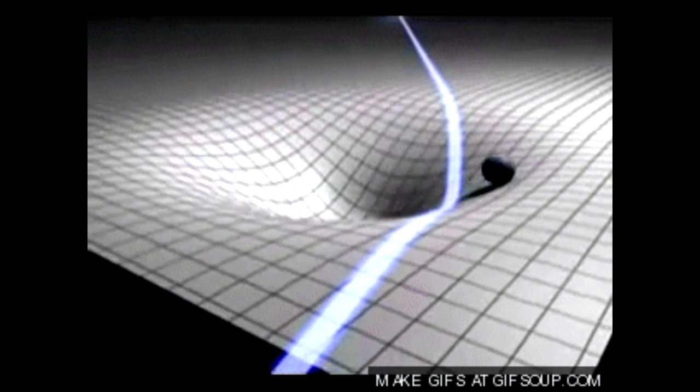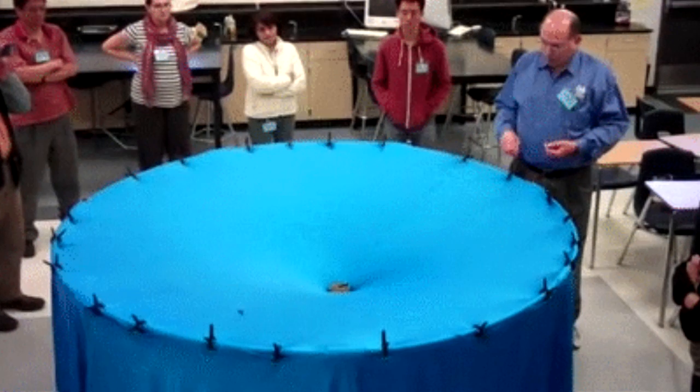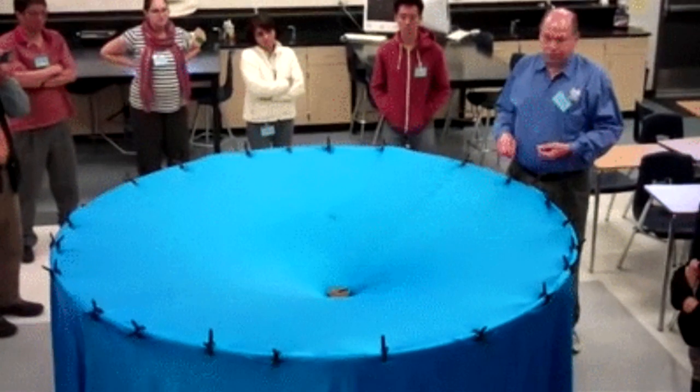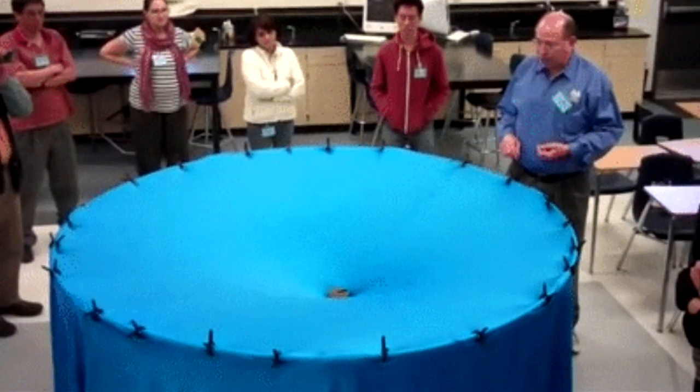This theory can be visualized with an easy experiment like this. I've put a very interesting video link in the description below in which gravity is visualized. The net in this case represents the spacetime continuum. Every ball represents a body of mass which has consequently a curve in the net.